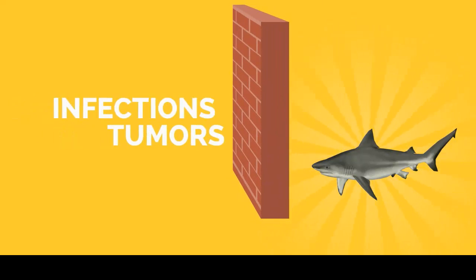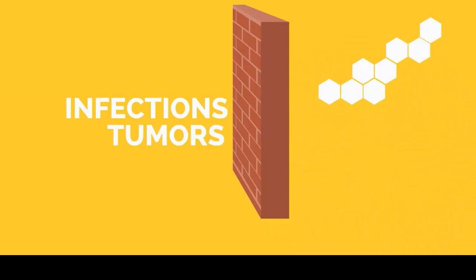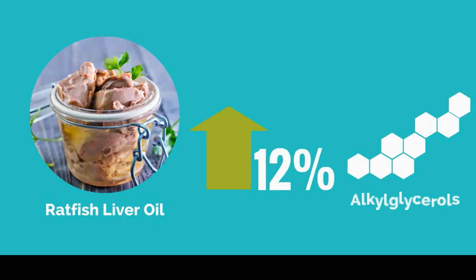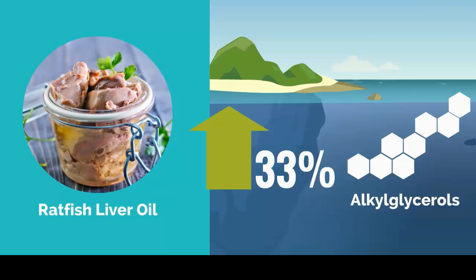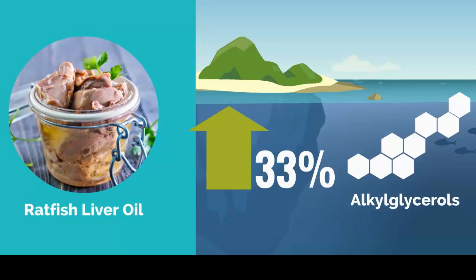Nearly all species of sharks are known to have an extraordinary resistance to the growth of tumors and infections due to an abundance of ether lipids called alkylglycerols and the compound squalamine. The ratfish liver oil has up to a 33% higher value of alkylglycerols than any other fish in the sea, including sharks.